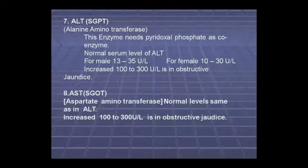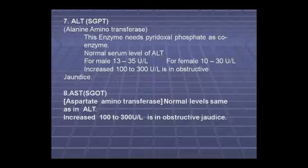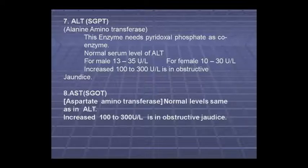SGOT and SGPT are the most important enzymes we see in liver disease. ALT, alanine aminotransferase, also called SGPT, uses pyridoxal phosphate as a coenzyme. Normal levels are: male 13–35, female 10–30 IU per liter. It will increase to 100–300 IU, indicating obstructive jaundice. SGOT is called aspartate aminotransferase.